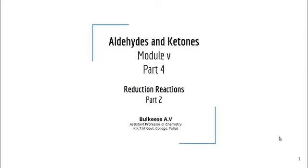In your last class, we already discussed Clemmensen Reduction and Wolff-Kishner Reduction. I hope you remember the reagents. The reagent in Clemmensen Reduction is Zinc amalgam and Concentrated HCl. In the case of Wolff-Kishner Reduction, it is Hydrazine and Potassium Hydroxide or Potassium Tertiary Butoxide.